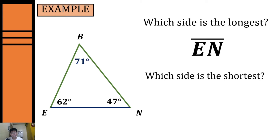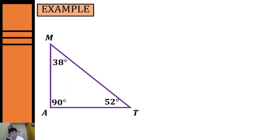Now let's find the shortest side in this triangle. To find the shortest side we have to identify the smallest angle. Our smallest angle is angle N with 47 degrees. Using the Angle Side Inequality Theorem, the side opposite the smallest angle is the shortest side, so our shortest side will be side BE.